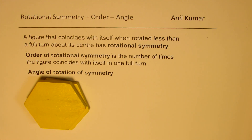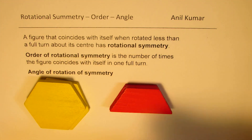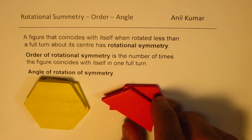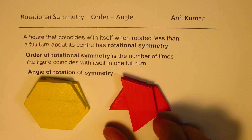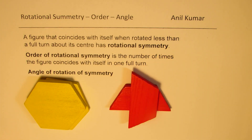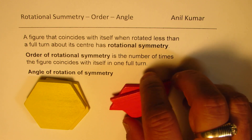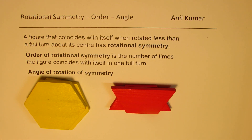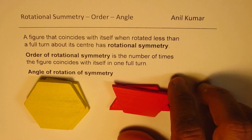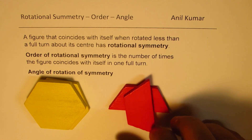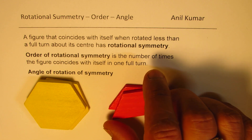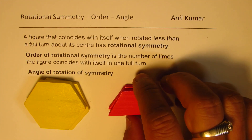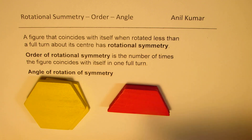On the other hand, if I have a figure like this — which is an isosceles trapezoid — if I rotate it, it doesn't match onto itself. Even when I do it 180 degrees, it is not matching itself. So in a turn less than 360 degrees, it is not going to match itself.